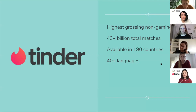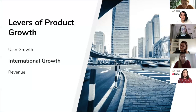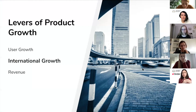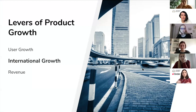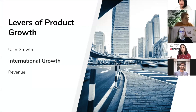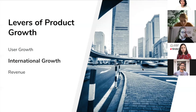So with that context, let's dive into it. There are three levers to growth. There's user growth, where you're focused on a very specific demographic and try to optimize on that demographic, or you expand into other demographics. The second is international growth, focused on opening up to other countries. The third lever is revenue — you've achieved product market fit, and now you either increase pricing or reduce price to make it affordable to a larger audience.